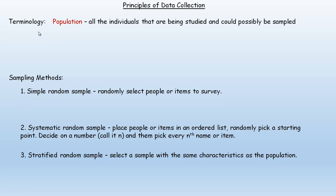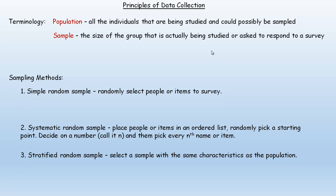The population is all the individuals or items — they don't always have to be people — that are being studied and could possibly be sampled. The sample is the size of the group that is actually being studied or asked to respond to a survey. The sample will normally be smaller than the population.